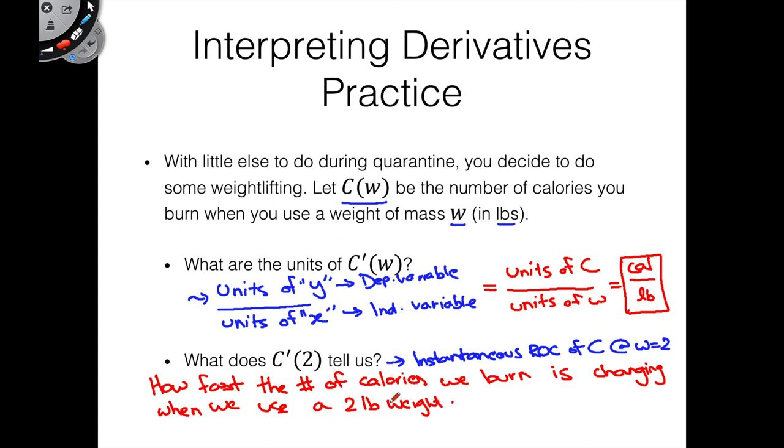So how fast the number of calories we burn is changing, that's the derivative part. That's telling us how fast this C is changing when we use a 2 pound weight. So that's what that really tells us. If we were to look at a graph, this would be the slope of that tangent line at the point W equals 2.